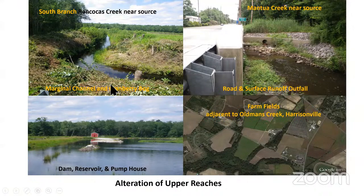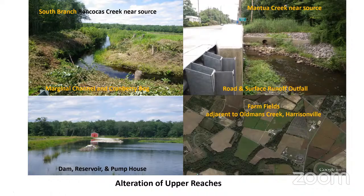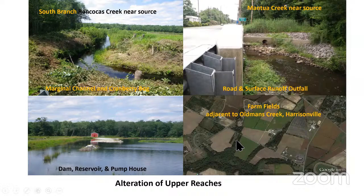Cranberry agriculture altered the environment — you start to see channels and ditches dug into the bogs, and reservoirs put in to flood them. In the inner coastal plain, the upper reaches are used somewhat differently: they're the place where storm water runoff is dumped. Runoff from developments, shopping centers, and roads is put into underground pipes and drained into the streams — essentially a storm water runoff system. In other parts, agriculture grows right up to the edges of the streams.